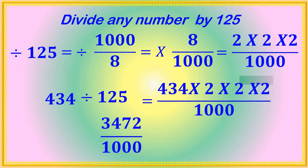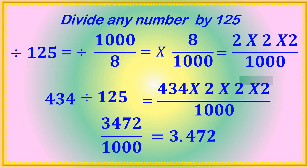So we have 3472 divided by 1000. In the denominator there is 1000, which has three zeros, so after three digits from the right you put a decimal point. That gives 3.472. If you divide 434 by 125 you will get 3.472.